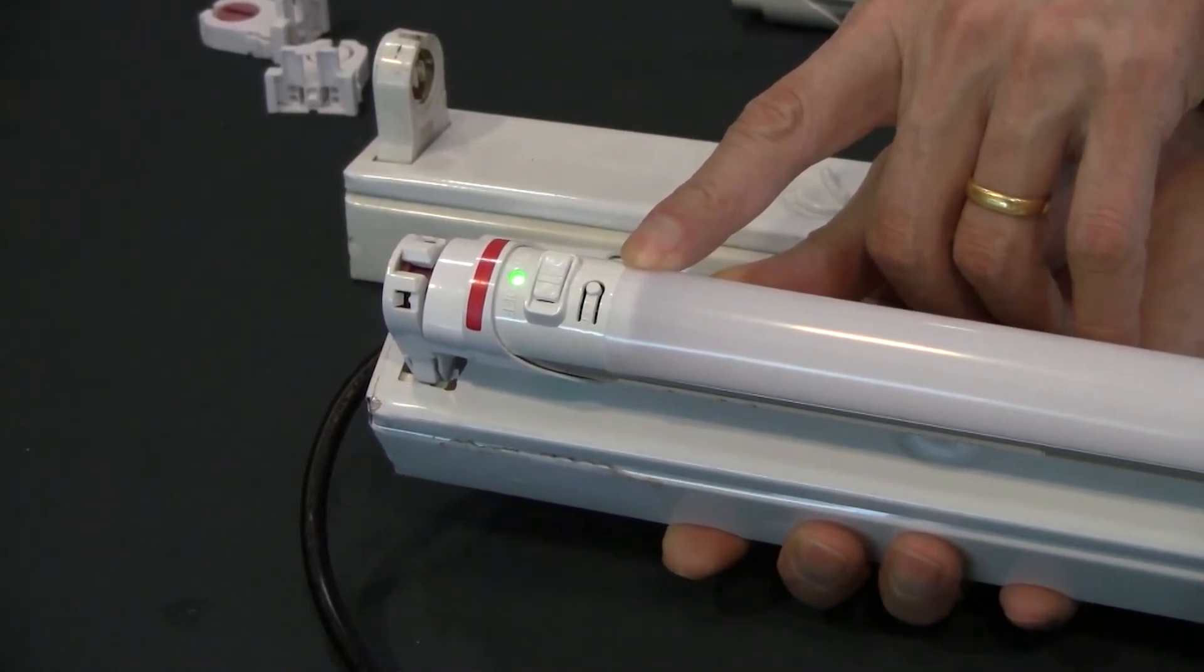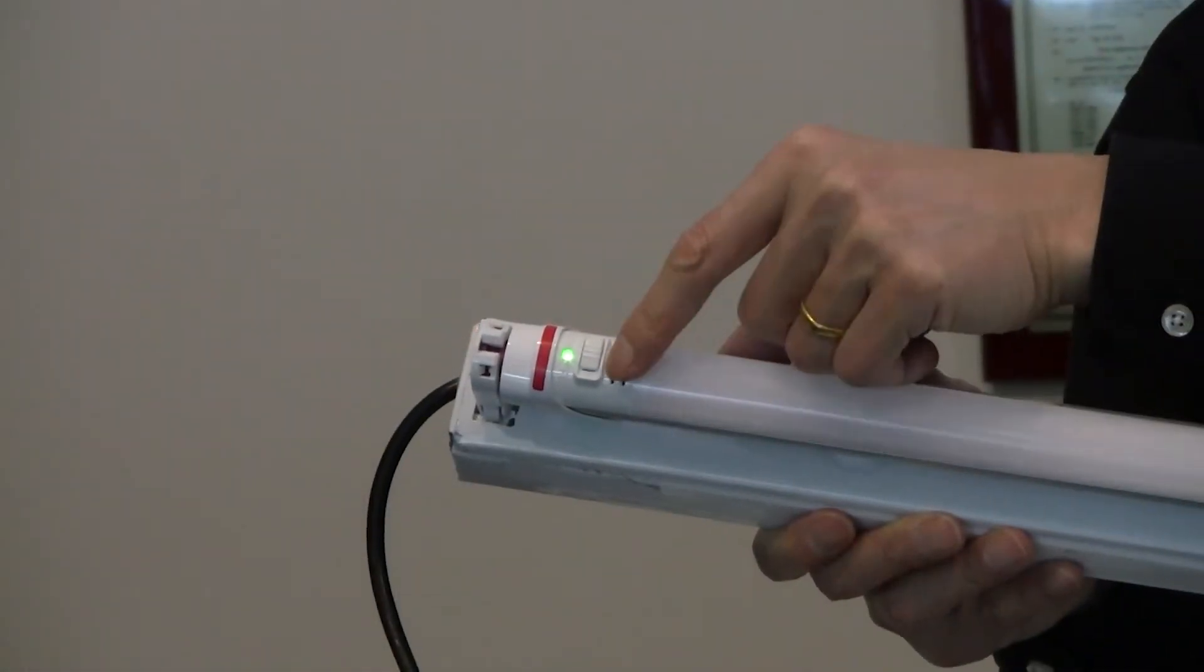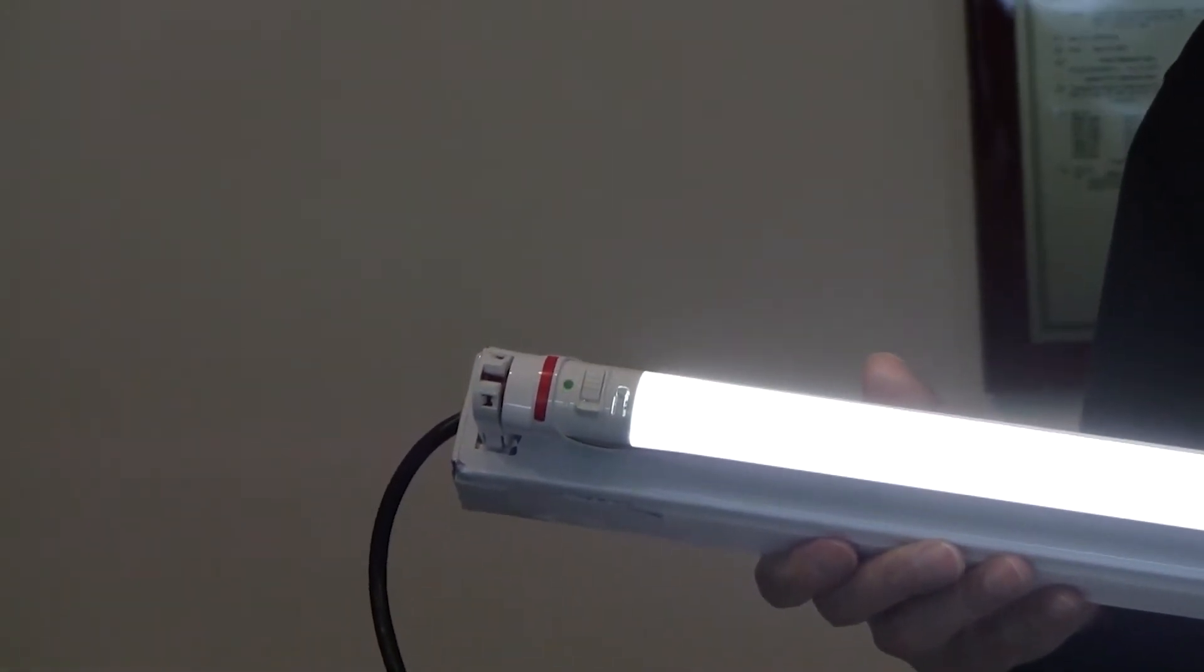For manual testing, there is a button located on the battery end of the tube. Once pressed, it will run a manual test for 30 seconds.